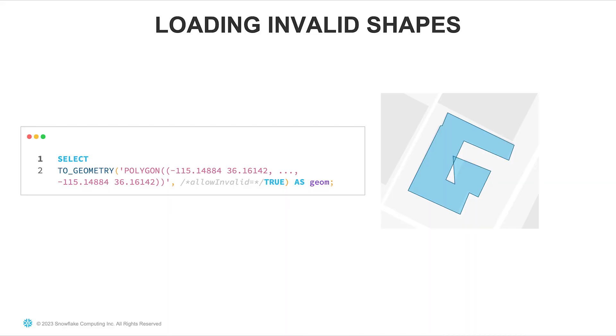The next step: if you have spatial objects with self-intersections or spikes, those objects are considered invalid. If you want to load those objects into Snowflake as geometry, you should do so by explicitly setting a parameter of the constructor function — the parameter that allows loading invalid objects. After loading those shapes, we recommend fixing them, since some functions will return null if you pass an invalid shape as input. The same applies to geography — you can also load invalid shapes and fix them afterwards.